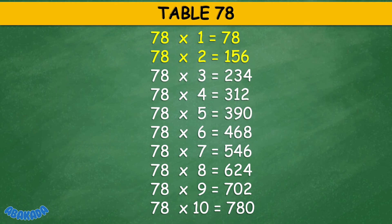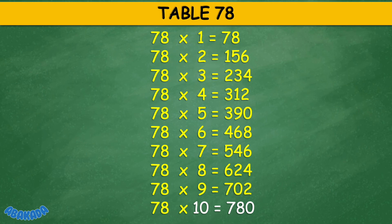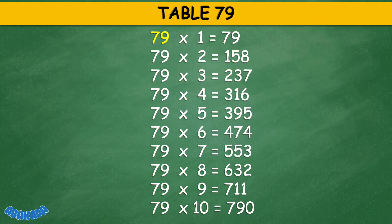Table 78: 78 times 1 equals 78, 78 times 2 equals 156, 78 times 3 equals 234, 78 times 4 equals 312, 78 times 5 equals 390, 78 times 6 equals 468, 78 times 7 equals 546, 78 times 8 equals 624, 78 times 9 equals 702, 78 times 10 equals 780.